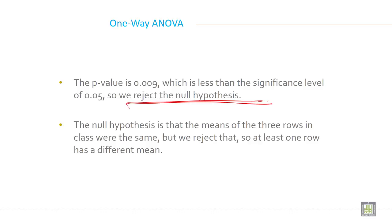The null hypothesis is that the means of the three rows in class were the same, but we reject that. So at least one row has a different mean.